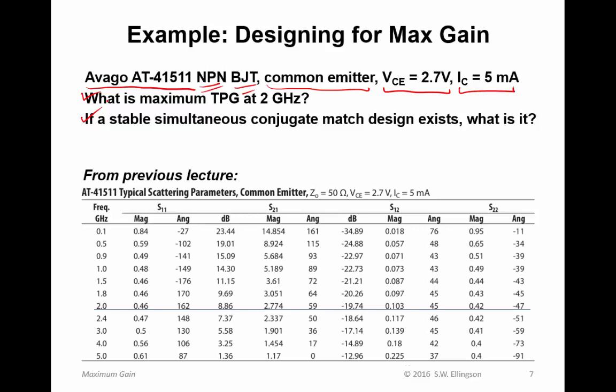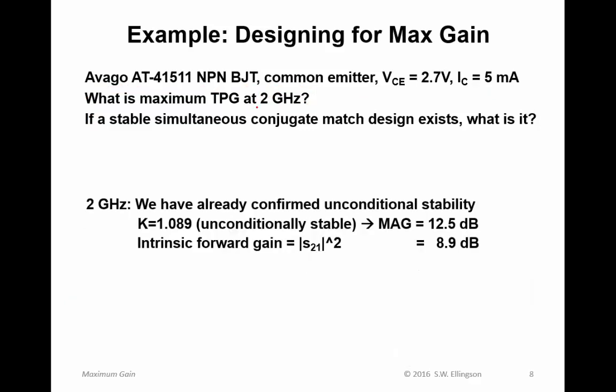First we need the S-parameters. From a previous lecture and the data sheet, here's the table of S-parameters. We look down until we see 2 gigahertz — here, indicated by this line, are the S-parameters in polar notation. You should have some practice converting between polar and Cartesian forms. At 2 gigahertz, we've already confirmed unconditional stability — you can look back at the previous lecture where we actually did that. Applying our definition of MAG, we find 12.5 dB.